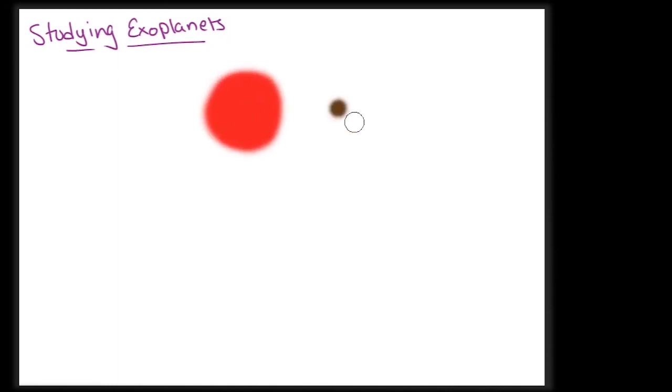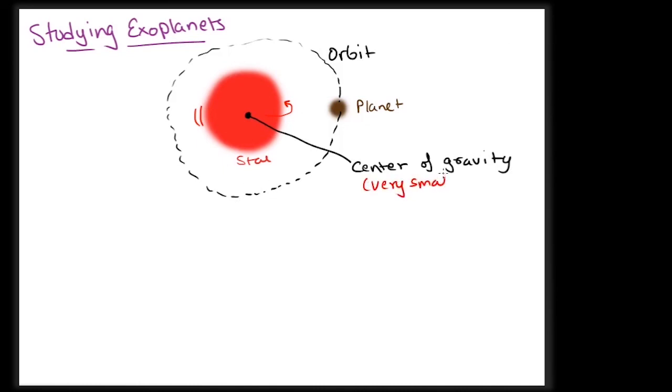The concept of Doppler shift has also been used to detect exoplanets. Similar to binary systems, in principle, a planet orbiting around the star also makes the star move around the common center of gravity. Usually, this center of gravity lies inside the star itself as the planets are very small compared to the stars, and hence the motion of the star is not very apparent.